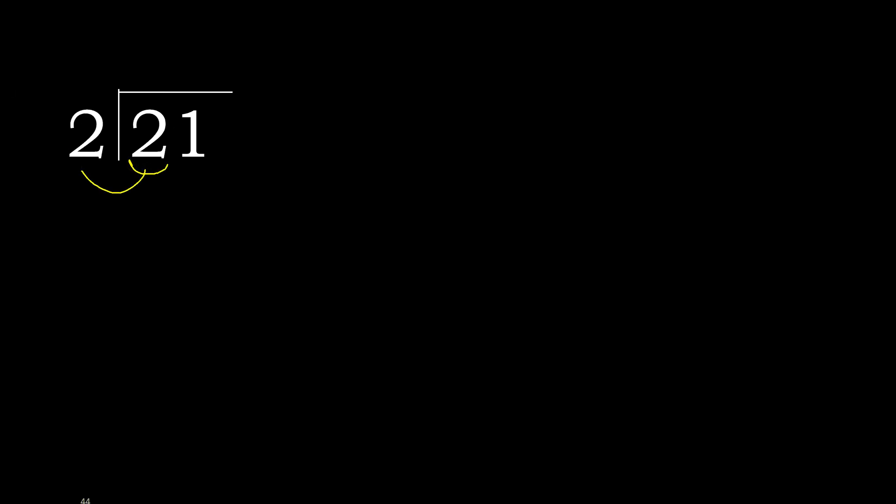21 divided by 2. 2 is not less, therefore work with 2. 2 multiplied by which number is nearest to 2, but not greater?